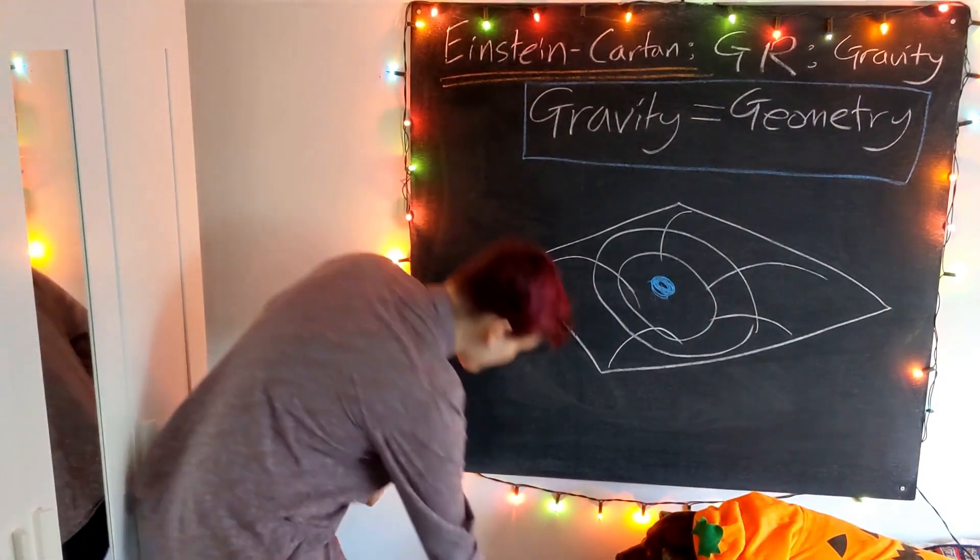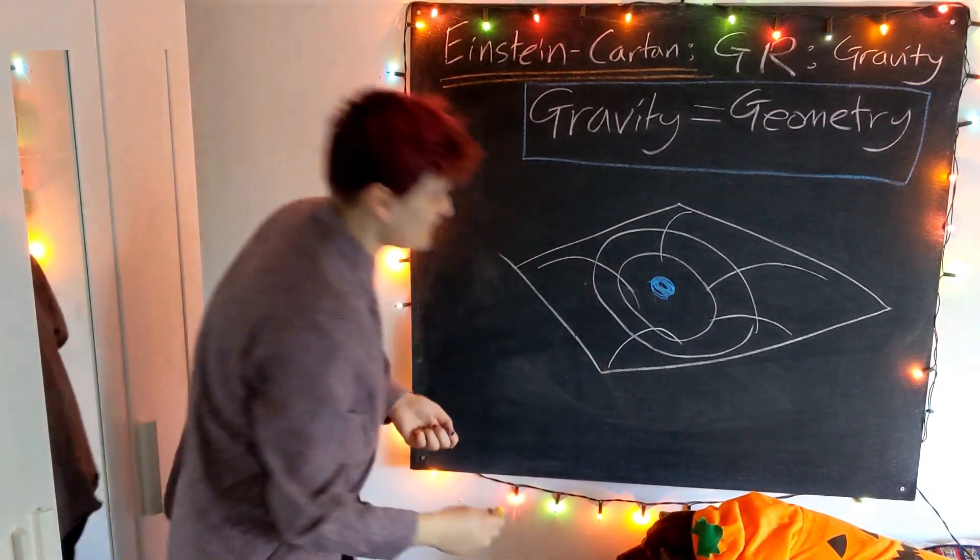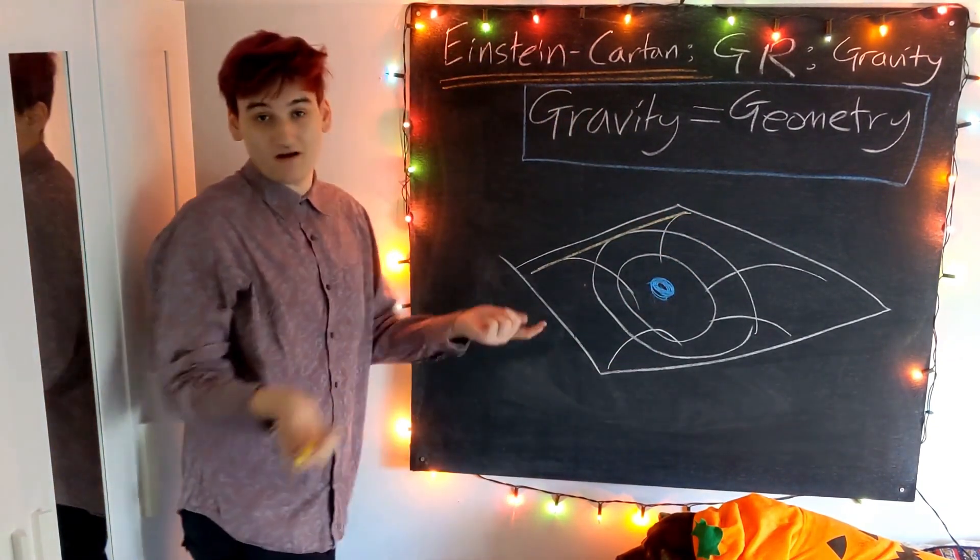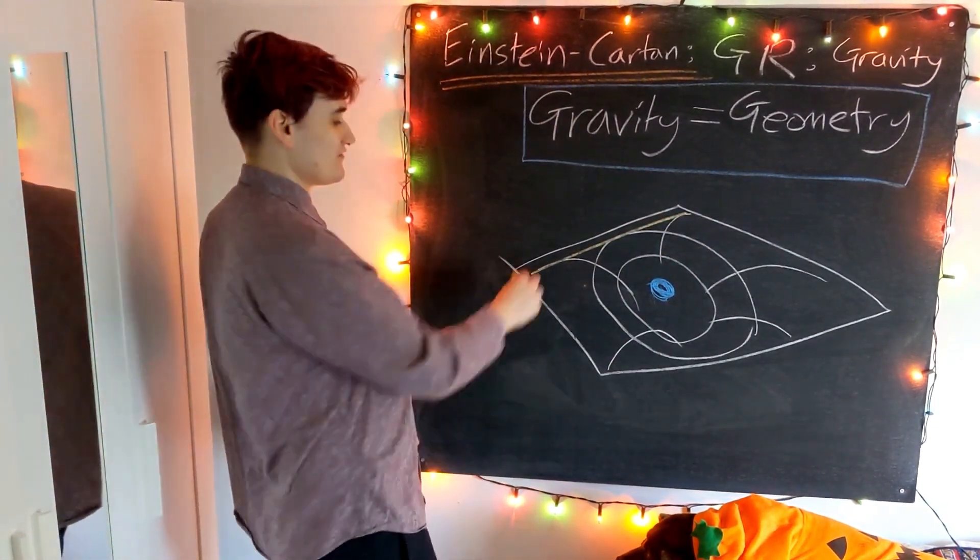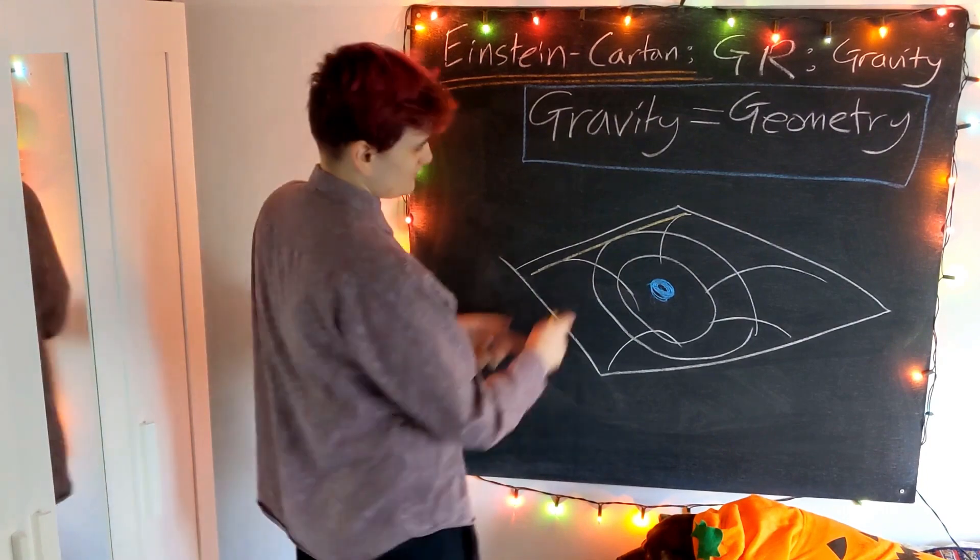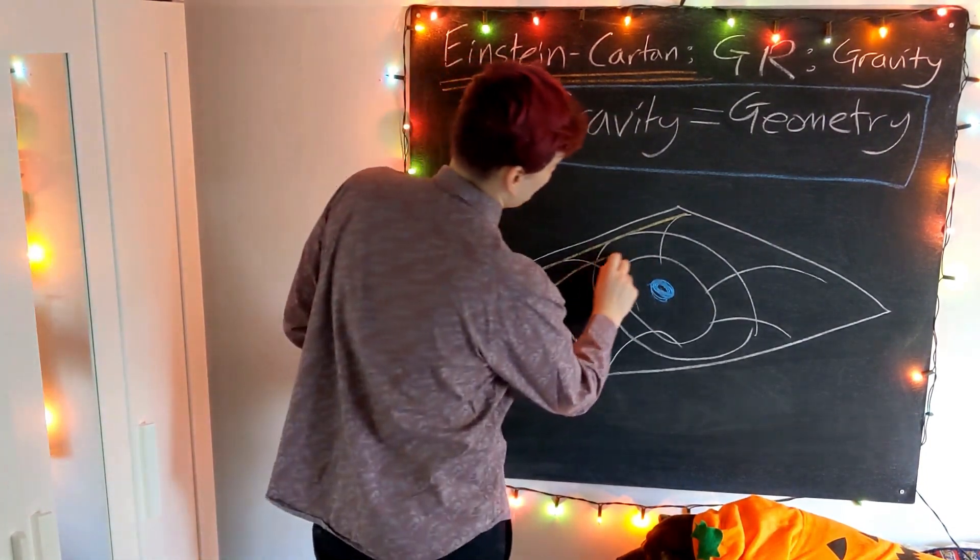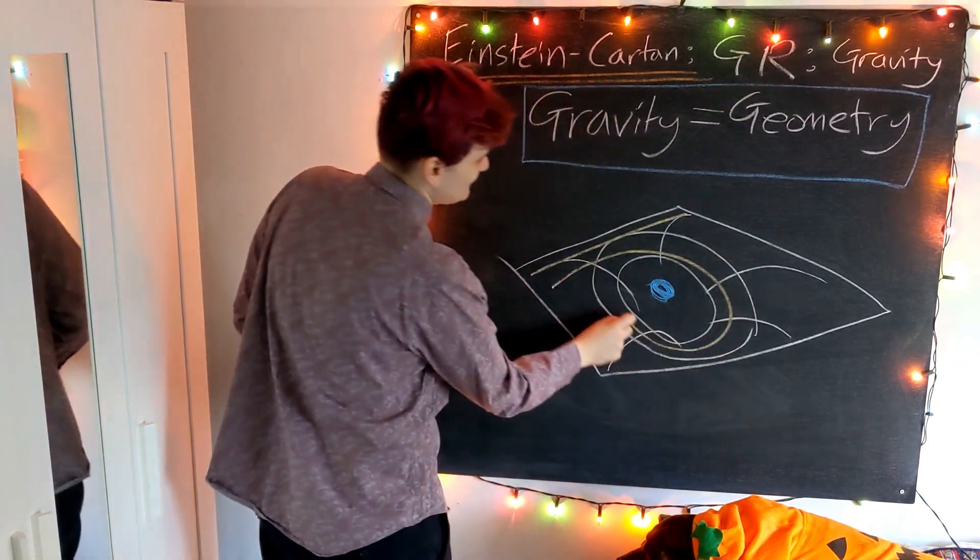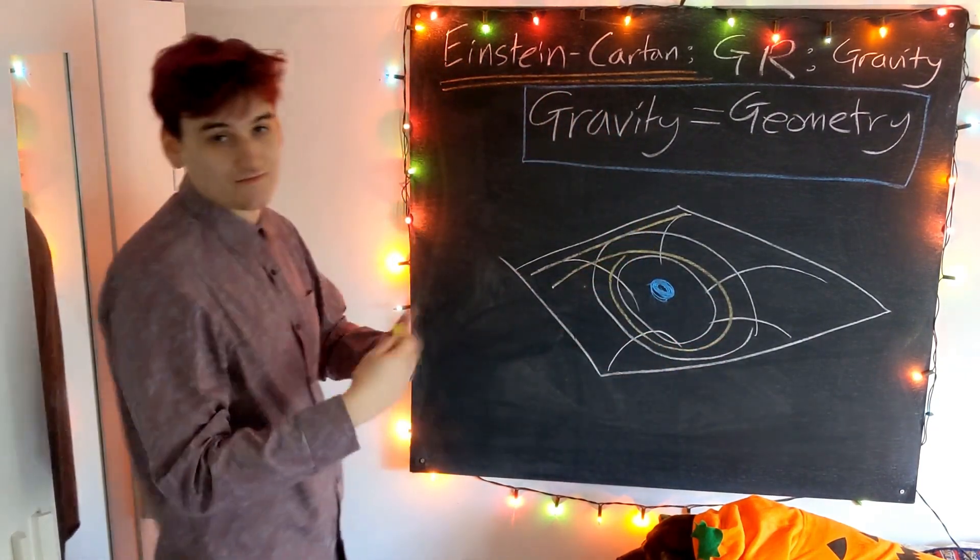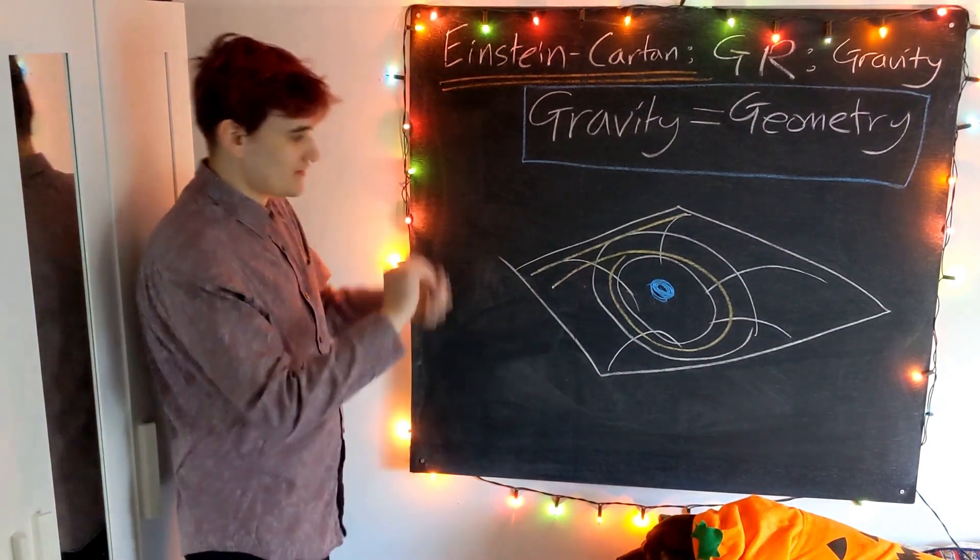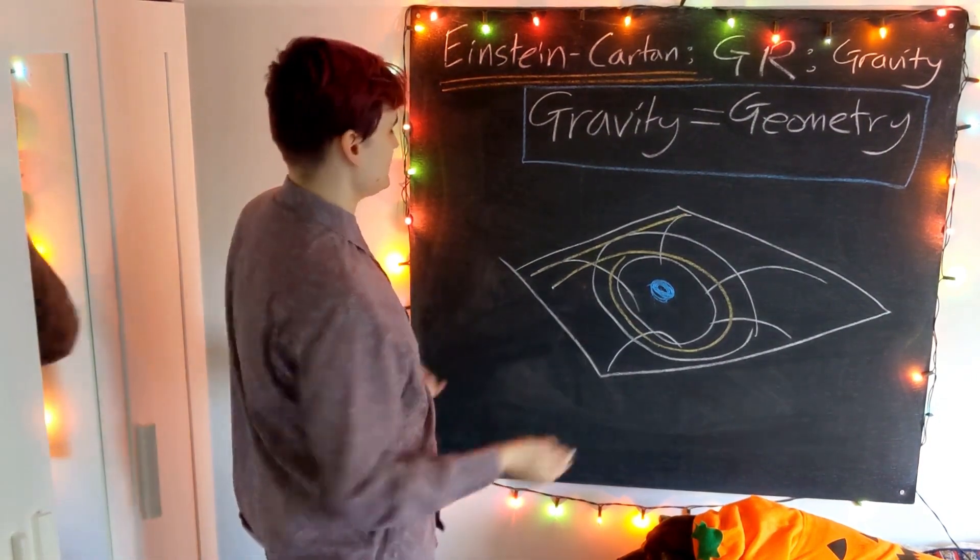If we introduce another particle into this picture far enough away, it will just travel in a straight line as if it were in flat space. But if it gets close to this curvature, or as it gets close to this mass, it's going to feel the effects of traveling in this curved geometry and it's going to follow some kind of orbit trajectory.